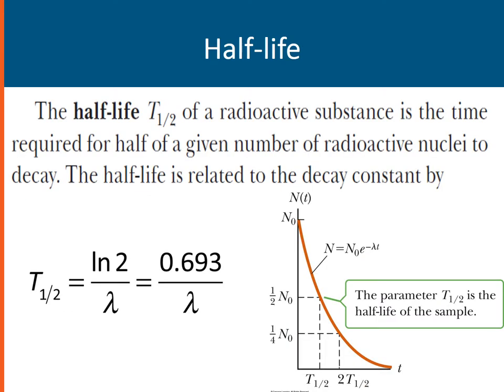Manipulating the previous equation N equals N sub 0, E raised to the power of negative lambda T, would lead us to another very important concept in nuclear physics, which is called half-life. The half-life, denoted by the symbol T sub 1 half, of a radioactive substance is the time required for half of a given number of radioactive nuclei to decay.